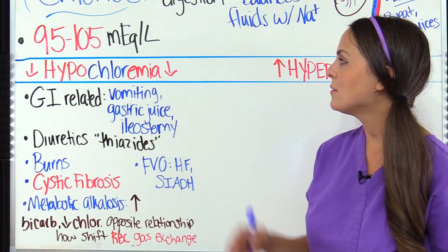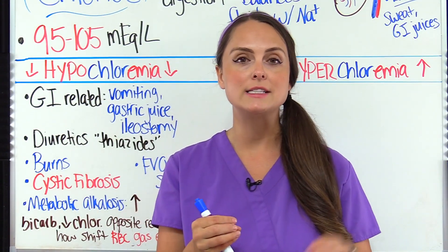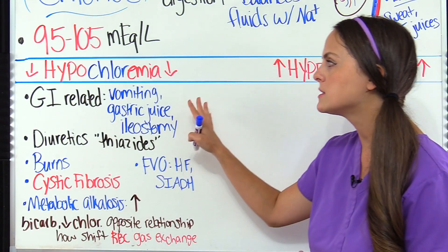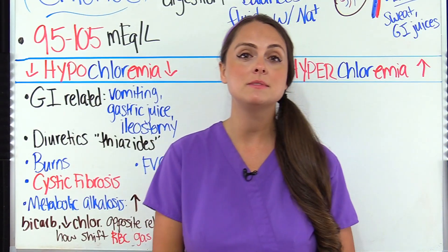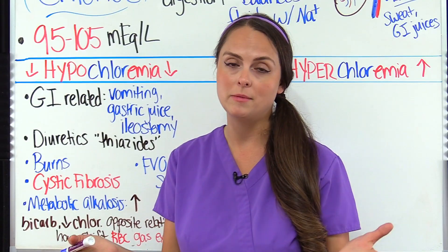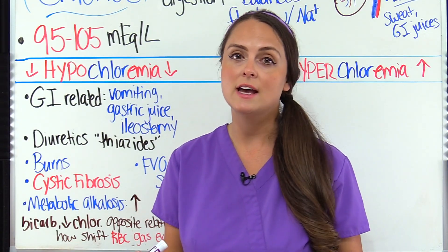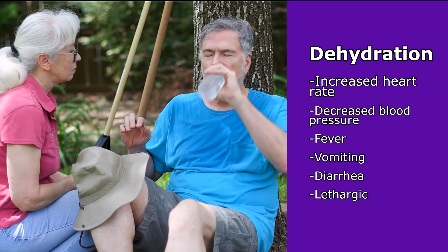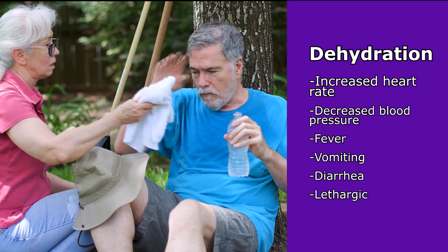The signs and symptoms of hypochloremia don't have their own specific set compared to other fluid and electrolyte imbalances — they're typically associated with whatever is causing the problem. If you can remember the signs and symptoms of hyponatremia, you can remember hypochloremia because they really overlap. You may see dehydration signs and symptoms with an increased heart rate, decreased blood pressure, fever, vomiting, diarrhea, or lethargy.